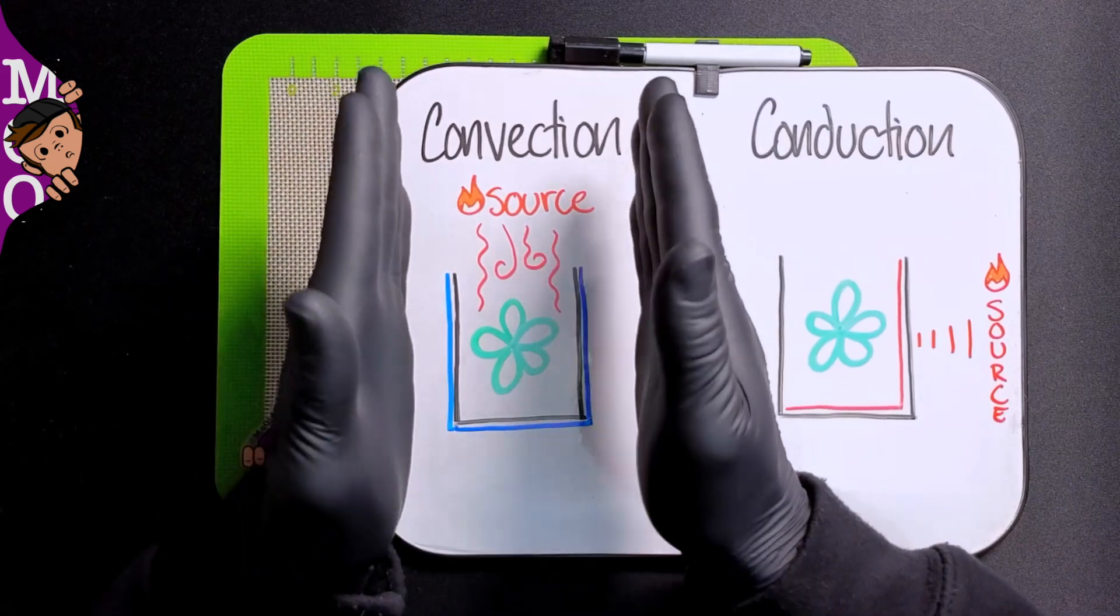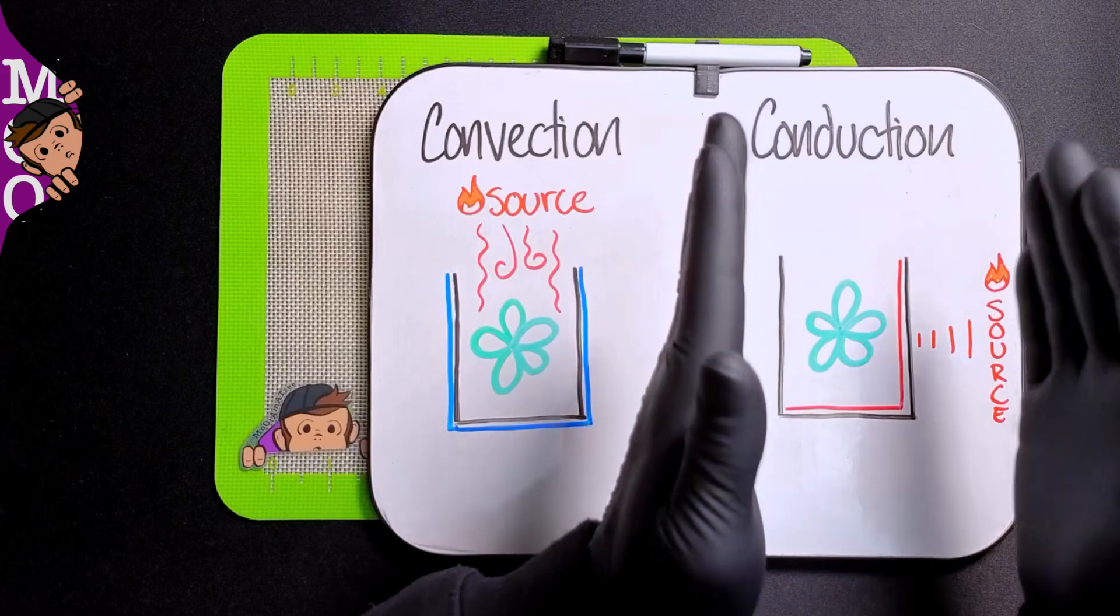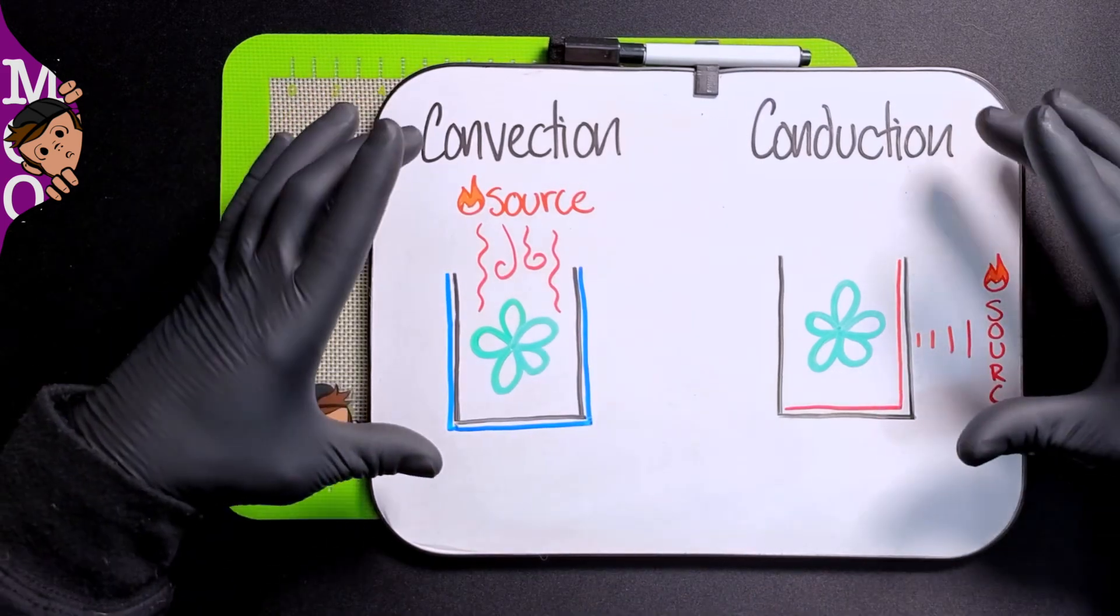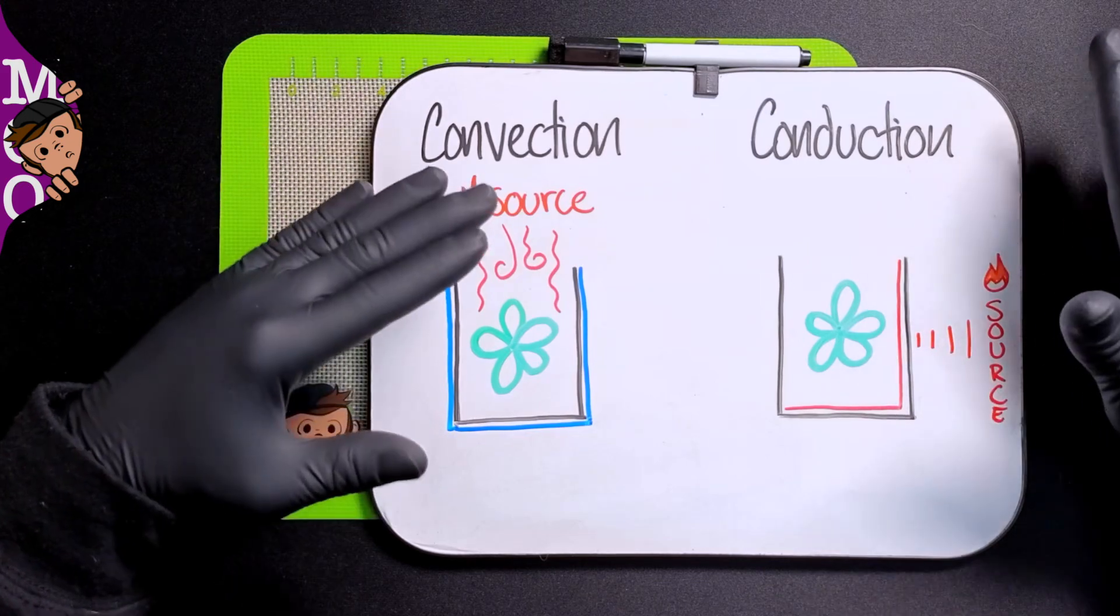Convection is mainly heat via air, conduction is mainly heat via contact. And even though these seem very similar, you get a lot different of an experience from each one.